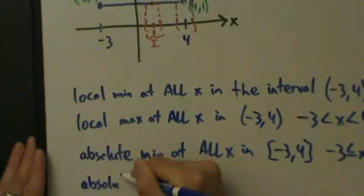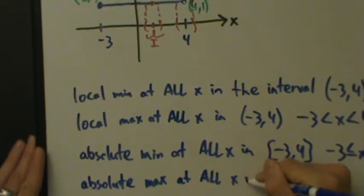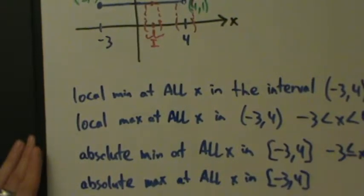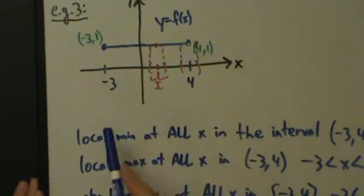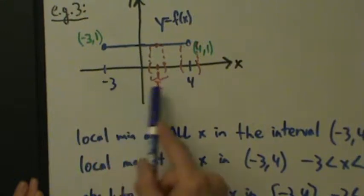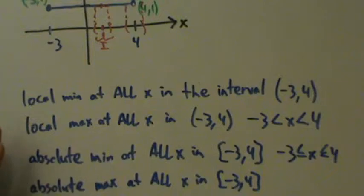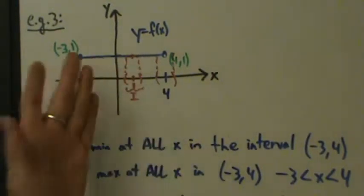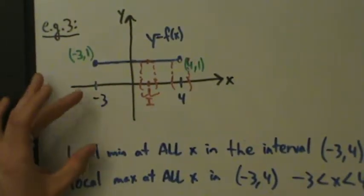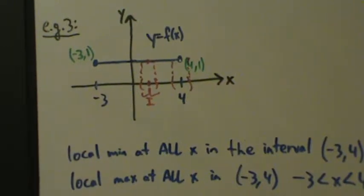Likewise, we have absolute maxes at all x in that same closed interval from negative 3 to 4. So at every value of x we have an absolute min and an absolute max, but we only have a local min and a local max at all values except the endpoints. The definitions of local min, local max, absolute min, and absolute max use non-strict inequalities — so for flat, constant functions like this, it still works. That's example 3.